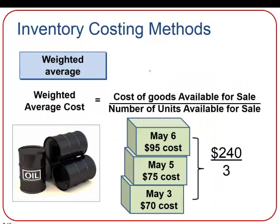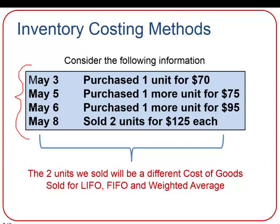The weighted average method uses the weighted average cost of goods available for sale for both the cost of each item sold and those remaining in inventory. For example, if three units are available for sale at a total cost of $240, each unit is assigned a cost of $80. So when we sell one, we expense $80 — rather than looking at each item's individual cost, we assign a weighted average cost to every unit. The cost of goods sold will differ across all inventory costing methods.